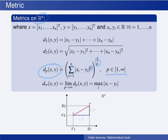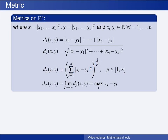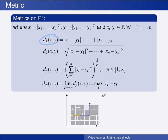For instance, if we choose p equal to 1, we get the d1 metric. The distance between x and y is the absolute value of x1 minus y1 — the length of one line segment — plus the absolute value of x2 minus y2 — the length of the other. So the d1 metric is the sum of the lengths of these two line segments. D1 is often called the taxicab metric or the Manhattan metric because it represents the distance you would have to drive in a city with a square grid of streets.